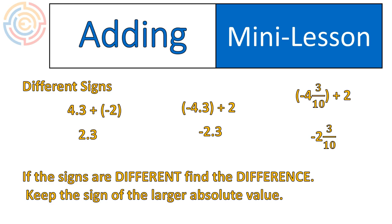Look at our first example. There's 4.3 positives. There's only two negatives. So there's more positives than negatives, so our final answer will be positive. In our final example, we have 4 and 3 tenths negatives. We only have two positives. That means we have more negatives than positives, so our final answer will end up being negative. That's what I mean by you keep the sign of the larger absolute value. Whichever number is bigger, that's the sign that you're keeping.